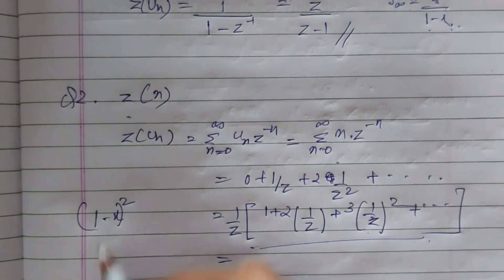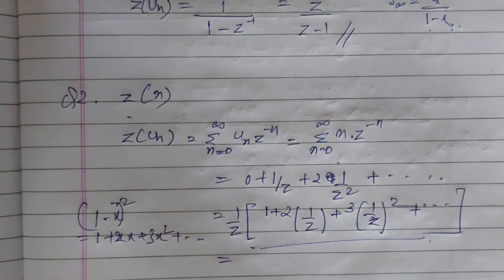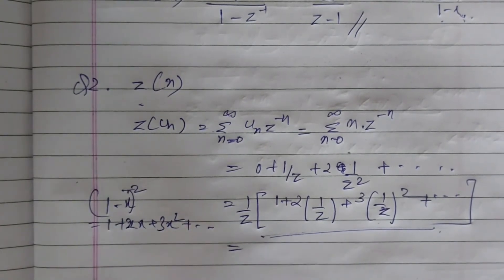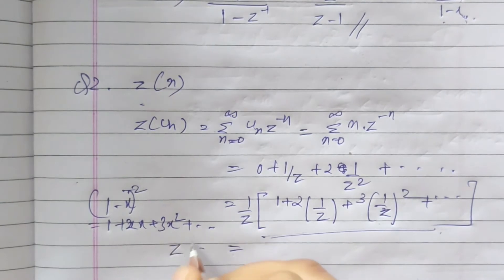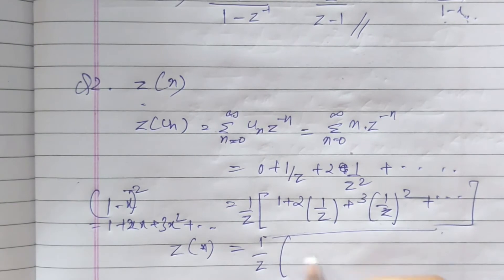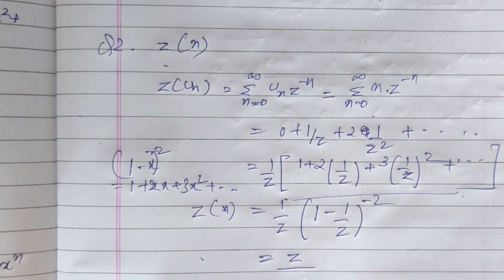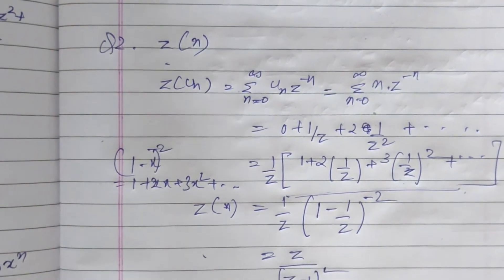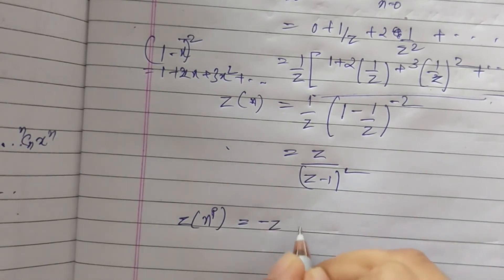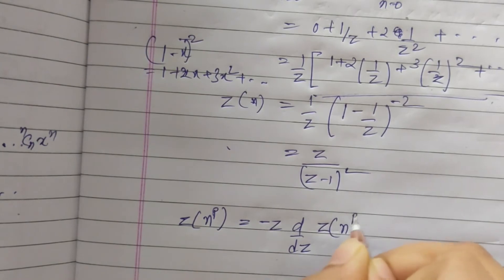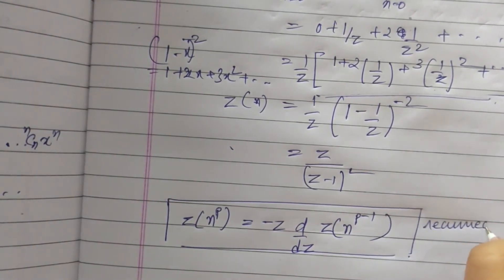This is of the form (1 - x)^(-2) = 1 + 2x + 3x^2 and so on — another expansion to add to your list. Our answer here is Z{n} = (1/z) * (1 - 1/z)^(-2), which simplifies to z / (z - 1)^2. An important result to know is the recurrence formula: Z{n^p} = -z * d/dz [Z{n^(p-1)}]. Please box this up.